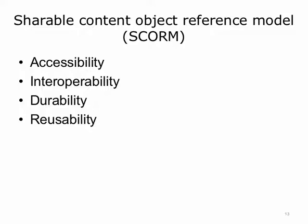Accessibility: the ability to locate and access instructional components from multiple locations and deliver them to other locations. Interoperability: the ability to take instructional components developed in one system and use them in another system. For example, content packaged for delivery in one SCORM compliant LMS could be loaded into another LMS that complies with the same version of SCORM for delivery to learners.